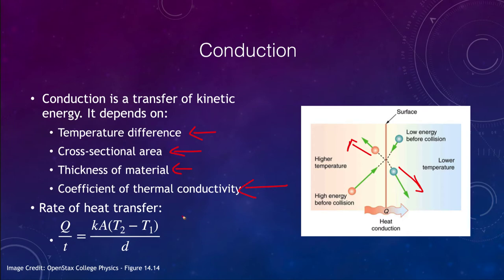It also depends on the coefficient of thermal conductivity, K, in our equation. Q is the heat, T is the time, A is the area, T2 and T1 are the temperatures giving the temperature difference, and D in the denominator is the thickness of the material. We can use all of those to calculate the changes that will occur.